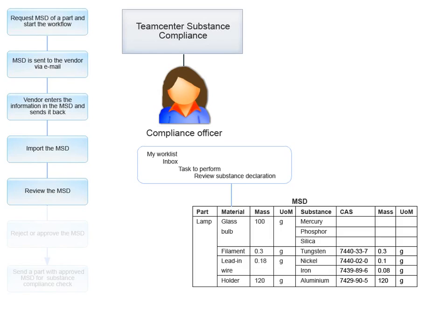While reviewing the MSD, you note that one of the materials used in the lamp is glass bulb. It is made of mercury, phosphor, and silica. However, the vendor has not entered the Chemical Abstract Service or CAS number, the mass, and the Unit of Measure (UOM) of the substances.